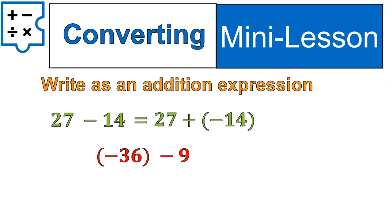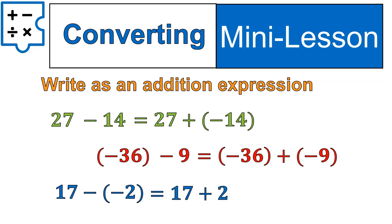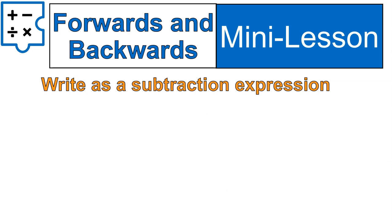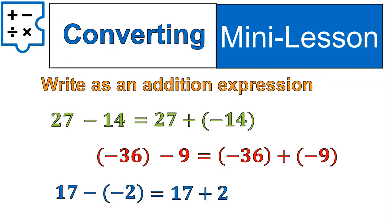Here we have one negative 36 minus 9. We could rewrite that as negative 36 plus negative 9. So again we're adding the opposite of the number instead of subtracting. 17 minus negative 2 would be 17 plus 2. Obviously simplifies it when we do that. And those are basically the situations. We'll work with those a little bit as we continue to practice.